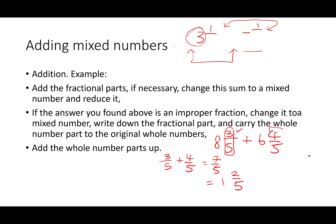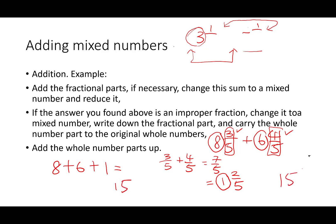We've completed the fractional part. Now we add the whole numbers together: eight plus six, plus the additional one resulting from converting the improper fraction, gives us fifteen. So the final answer is fifteen and two-fifths. That's how we add two mixed numbers together.